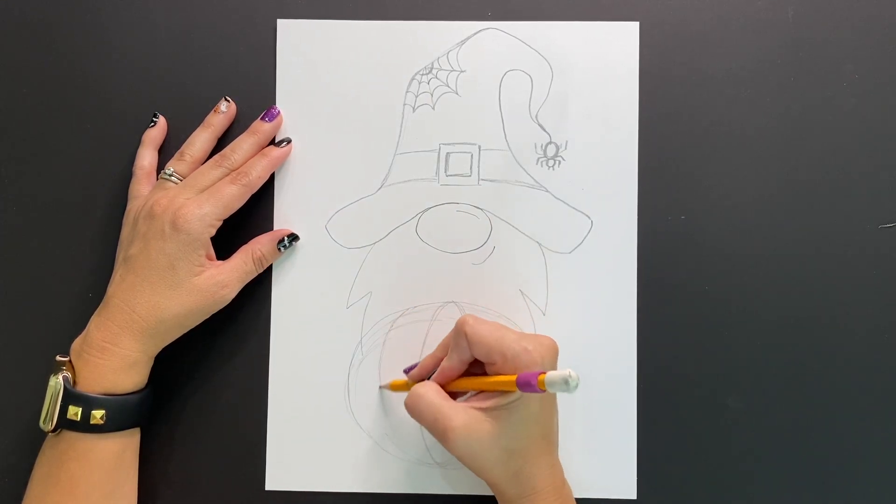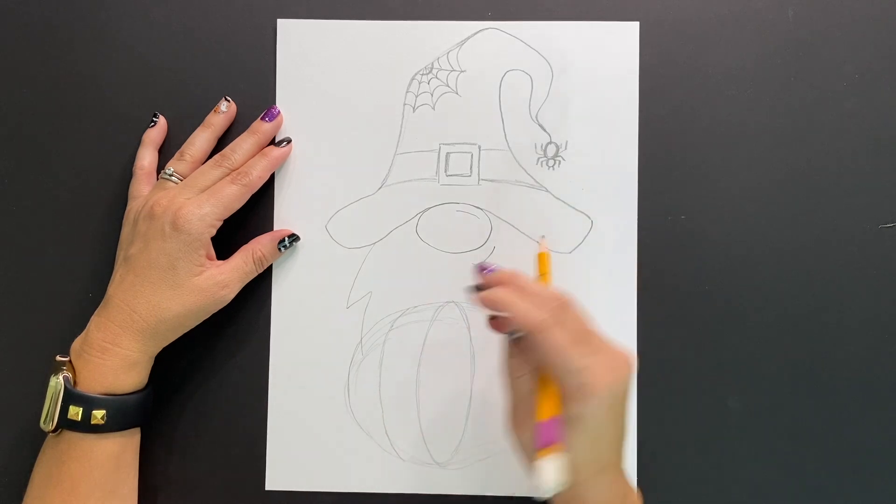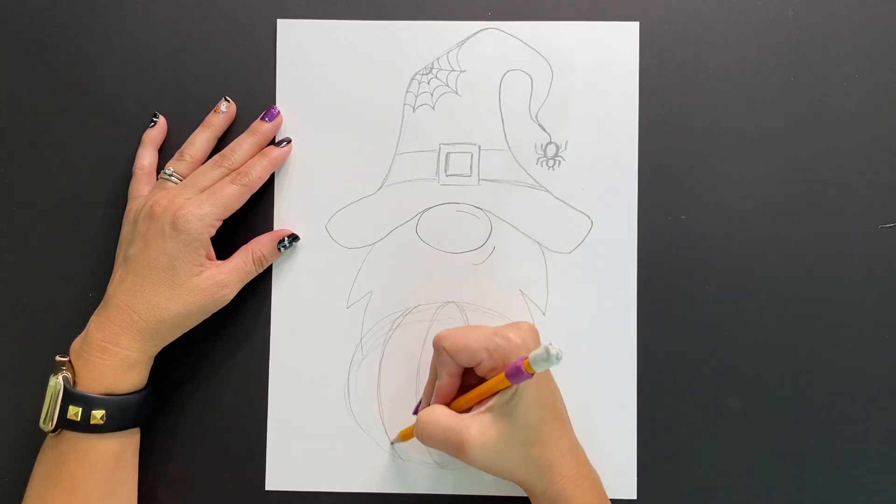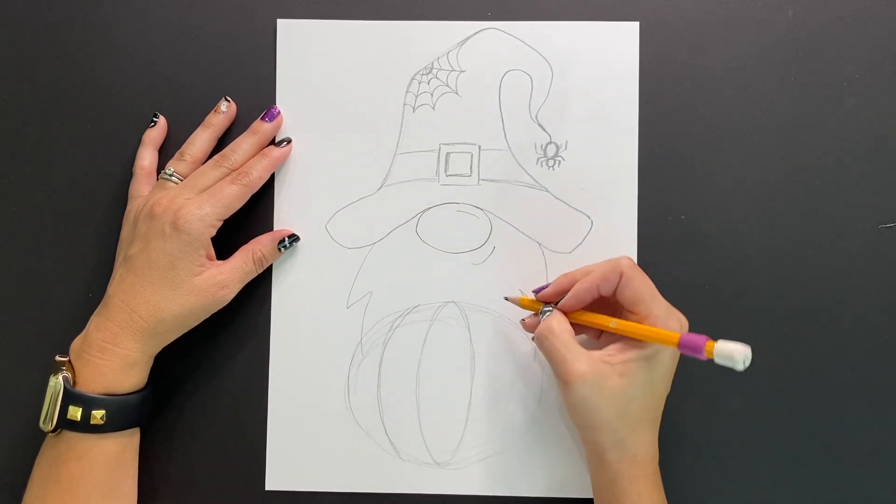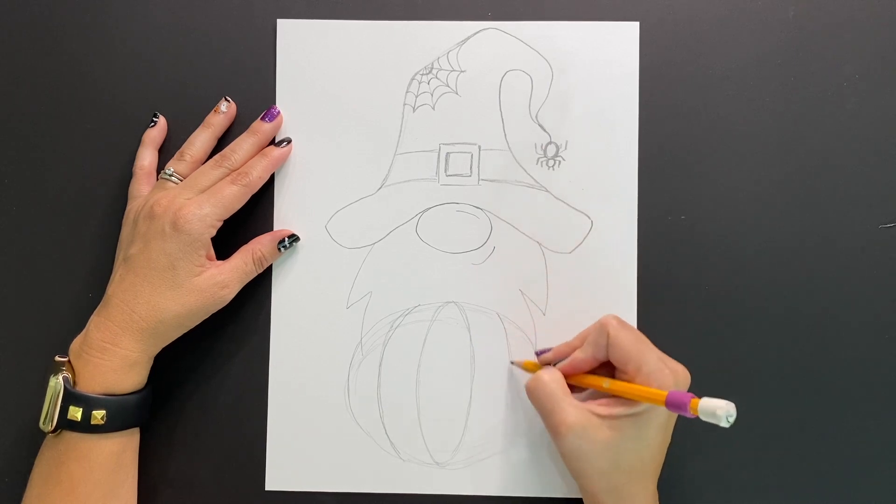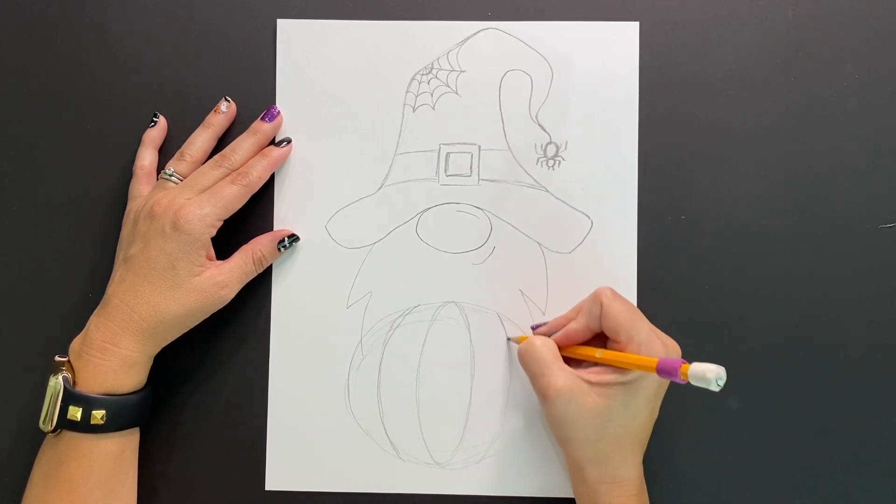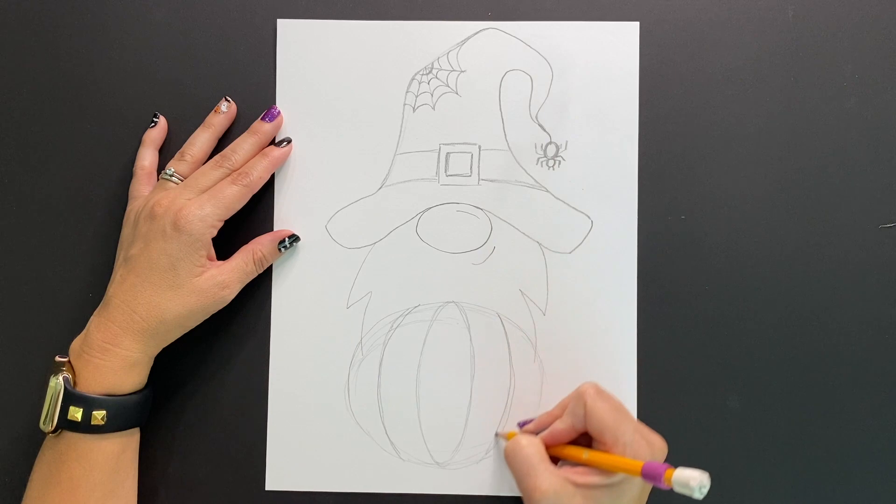Once I've got the general shape that I'm looking for, I'm going to now draw a very skinny oval shape right in the middle. Draw these lines lightly as well. Next, draw a curved line on the left hand side and one on the right hand side, sort of splitting those two sides in half.